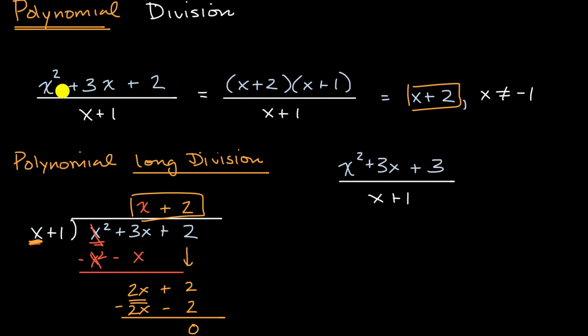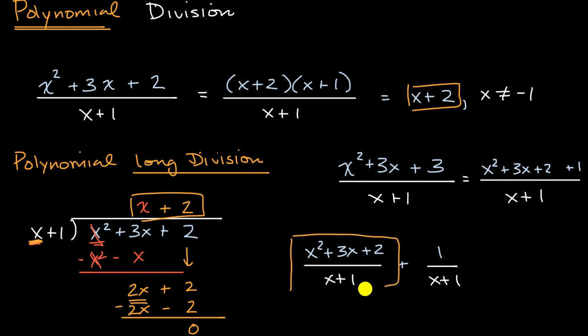One way to think about it, if we know we can factor x squared plus three x plus two, is to say this is the same thing as x squared plus three x plus two plus one, and then all of that's going to be over x plus one. And then you could say this is the same thing as x squared plus three x plus two over x plus one, plus one over x plus one. And we already figured out that this expression on the left is going to be equal to x plus two. So this is going to be equal to x plus two, but then we have that one that we weren't able to divide x plus one into, so we're just left with one over x plus one.